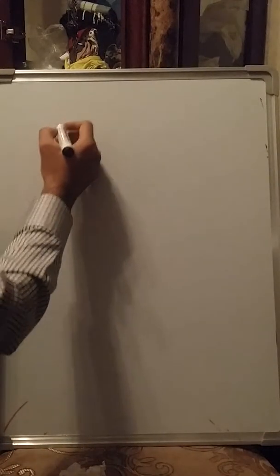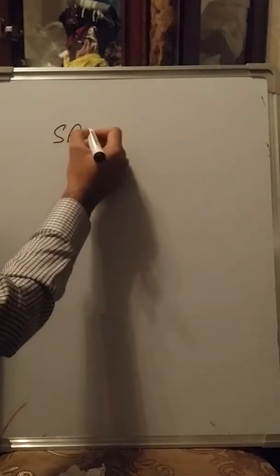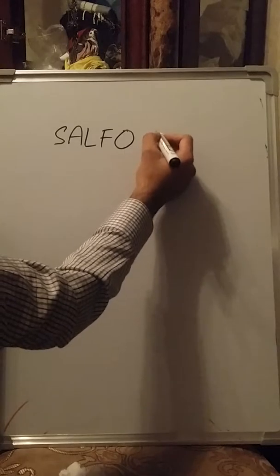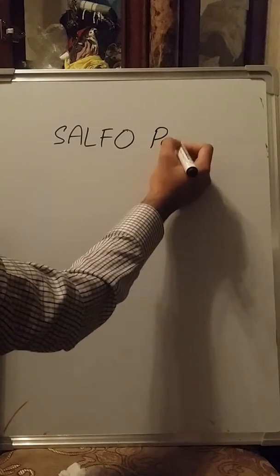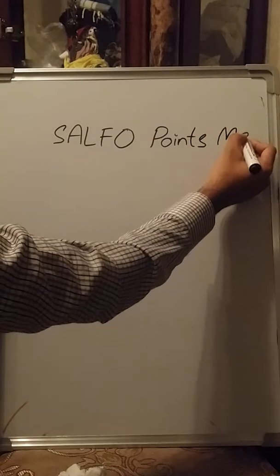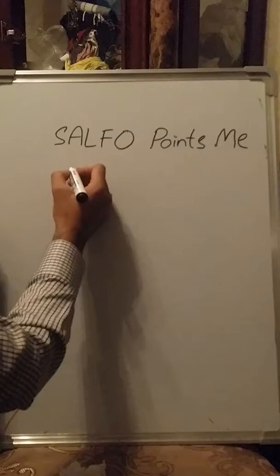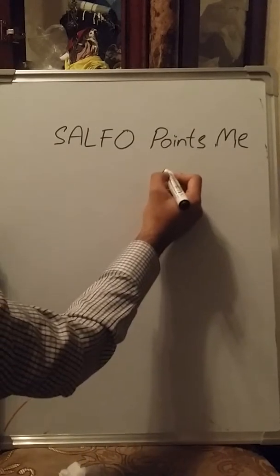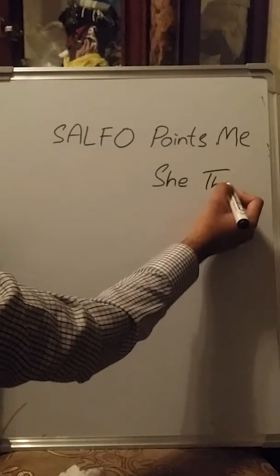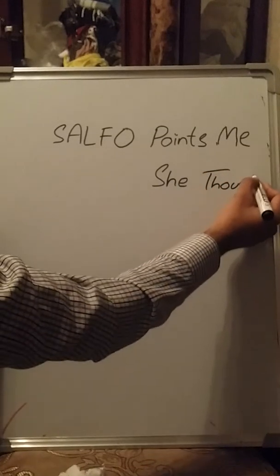The mnemonic I have created is: 'SALFO POINTS ME SHE THOUGHT.' Using this mnemonic, you can easily derive and remember all the branches of the external carotid artery.